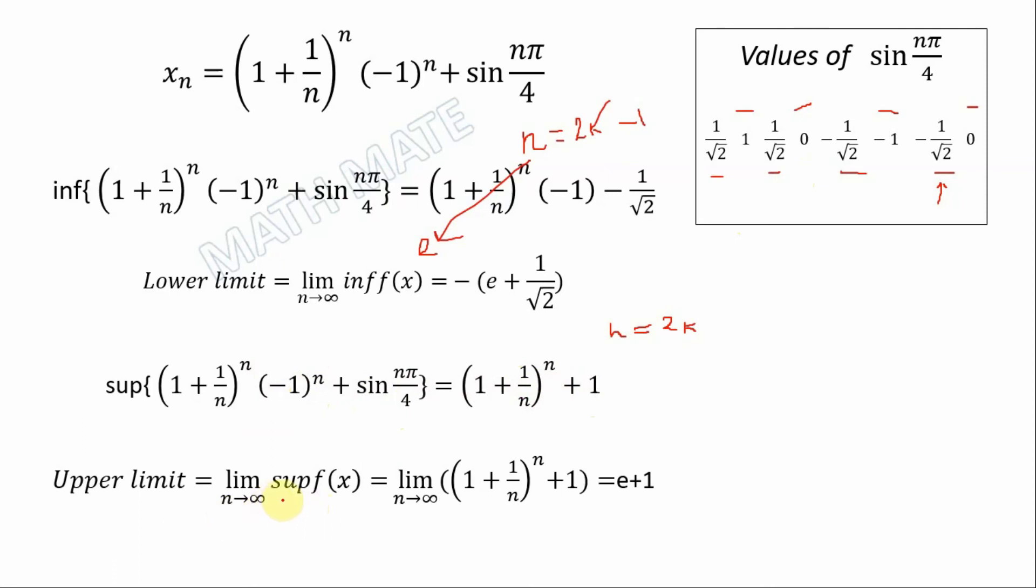Upper limit equals limit of supremum n goes to infinity. When n goes to infinity as in the previous case it goes to e. We just write instead of this e and plus limit of 1. So our upper limit equals e plus 1.